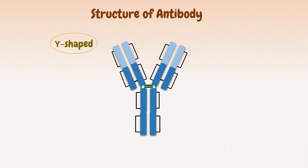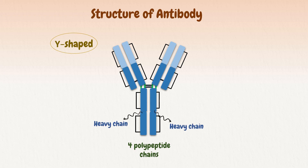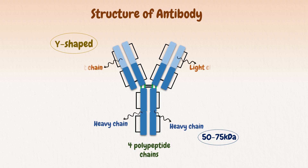The simplest antibody molecule is depicted as a Y-shaped structure, consisting of four protein subunits or four polypeptide chains. The two longer subunits are called heavy chains and are identical to each other, having a molecular mass of 50 to 75 kD. The two shorter subunits are also identical to each other; they are called light chains and have a molecular mass of about 25 kD.